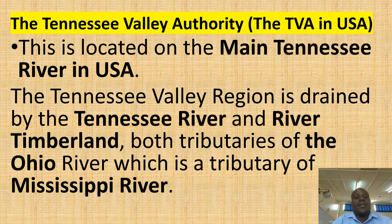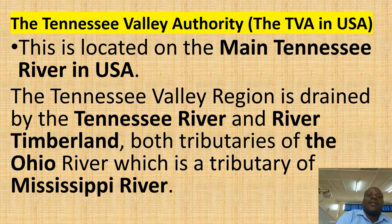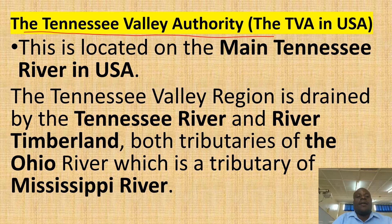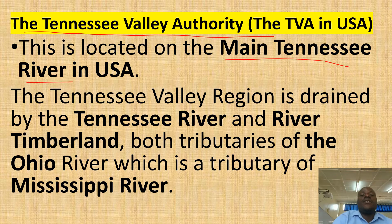Okay class, we are going to look at one of the case studies of multipurpose river projects and we begin with the Tennessee Valley Authority, which is sometimes abbreviated as TVA. In this lesson we need to know where it is located and the states of USA itself. It is located on the main Tennessee River in the USA.